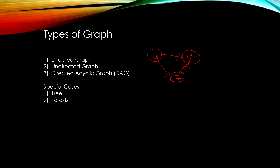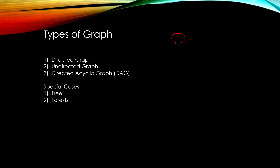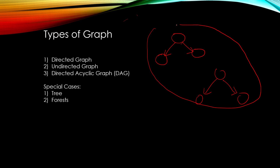Special cases of graphs include trees and forests. A tree is a structure where a vertex is connected to two other vertices. A forest is a combination of multiple trees. All tree problems can be solved using graph algorithms, though recursion is frequently used in trees, so either approach works.